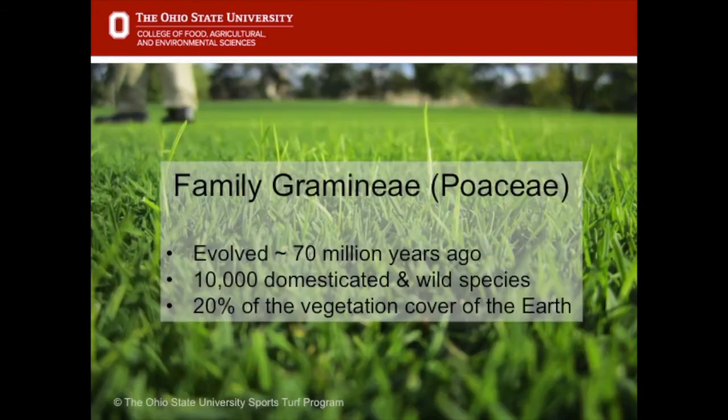Turf grasses belong in the family Graminae or Poaceae. Poaceae evolved around 70 million years ago and there are 10,000 domesticated and wild species. 20% of the vegetative cover across the earth is in the Poaceae family.